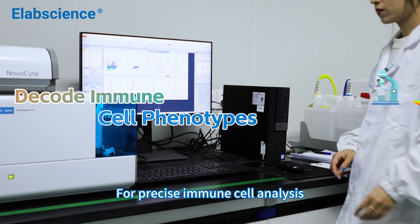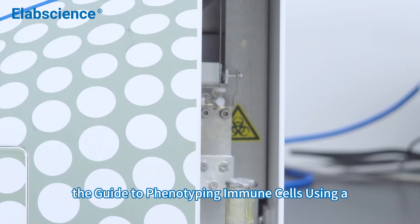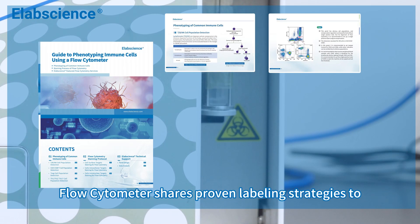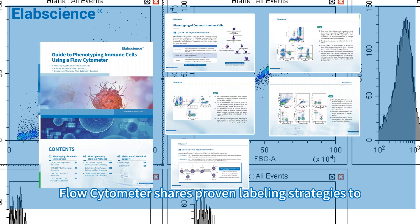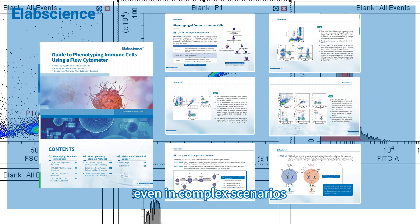For precise immune cell analysis, the Guide to Phenotyping Immune Cells Using a Flow Cytometer shares proven labeling strategies to help you classify cells accurately, even in complex scenarios.